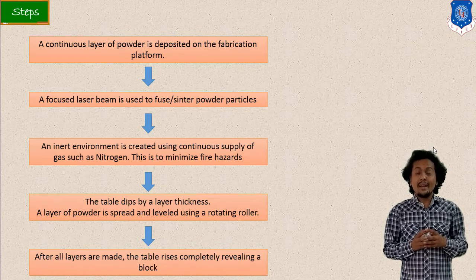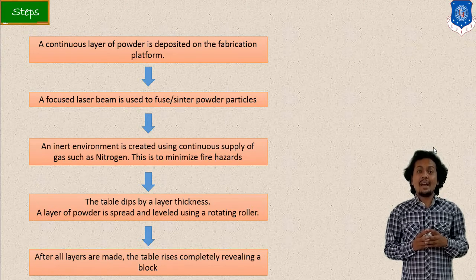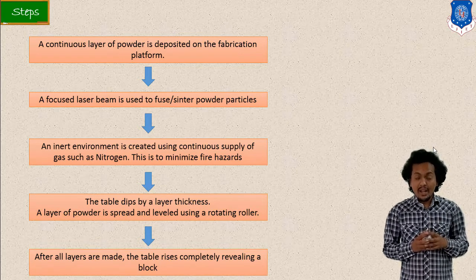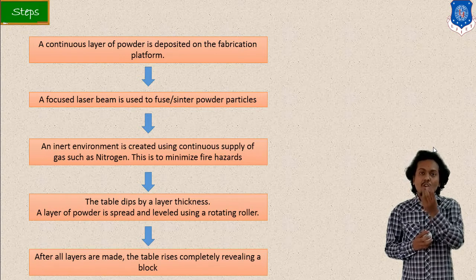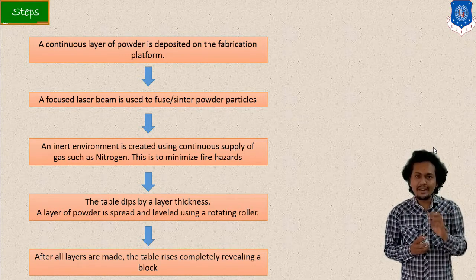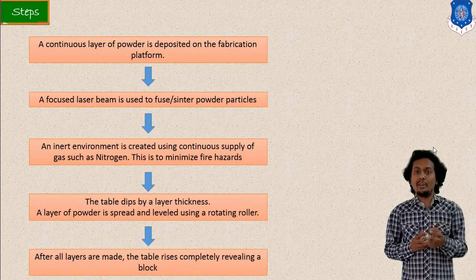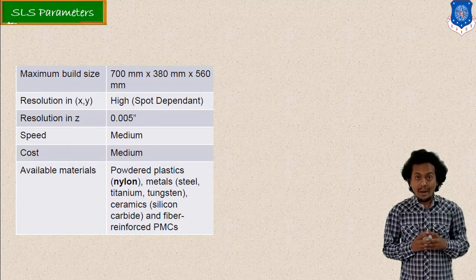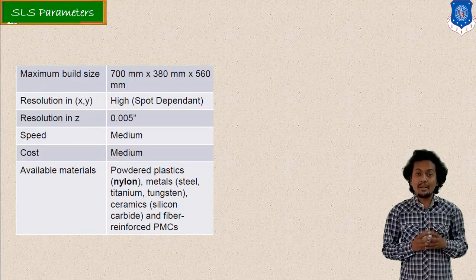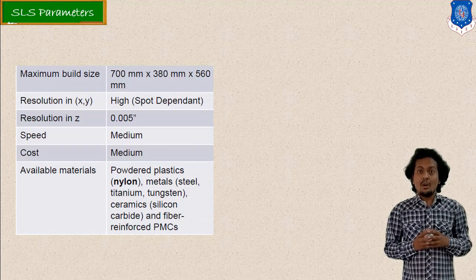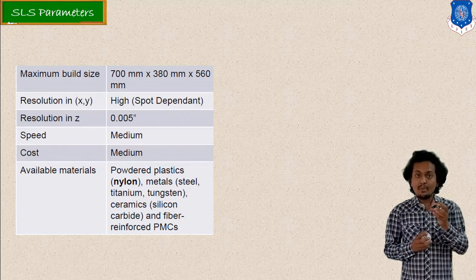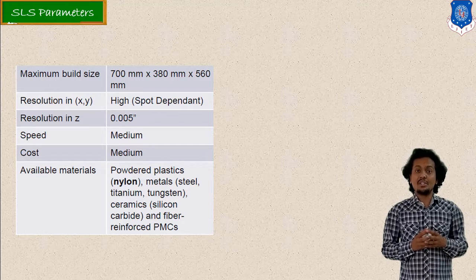First, you have to provide your model in the form of a .STL file, and after that the powder feeding mechanism is very important. After that, the focused laser beam scans according to your part geometry. Then your piston — the build platform — moves in the downward direction after layer-by-layer sintering. After all layers are manufactured, your part can be removed by keeping the piston in the fully upward direction.